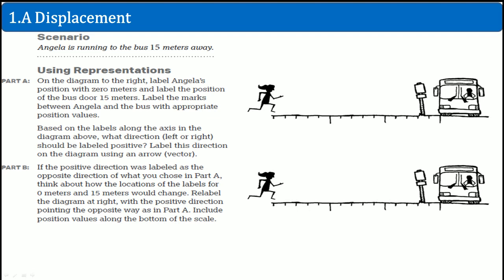Angelica is running to the bus 15 meters away. On the diagram to the right, label Angelica's position at zero meters and label the position of the bus at 15 meters. Label the marks between Angelica and the bus using the appropriate position values. There you go, goes all the way up to 15. She starts at zero, goes all the way to 15. And she's running to the right, so I would label that as positive.